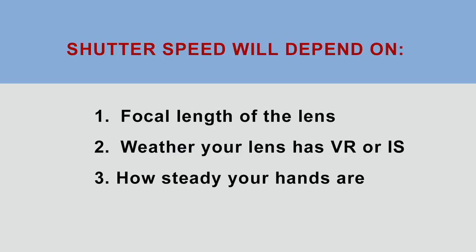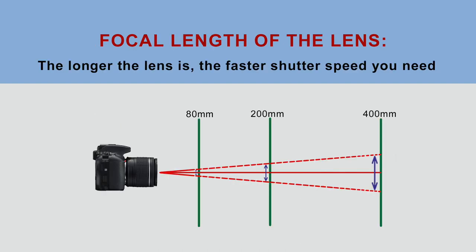Let's talk about shutter speed first. The question is how do we know which shutter speed is too slow? It will depend on three factors: focal length of the lens, whether your lens or camera have vibration reduction or image stabilization, and how steady your hands are when you are holding the camera. When it comes to focal length of the lens, the longer the lens, the faster the shutter speed you need to use to avoid camera shake. As you can see on this diagram, at focal length of 80mm, the movement will be less obvious than at, for example, 400mm.